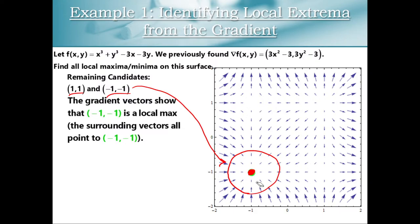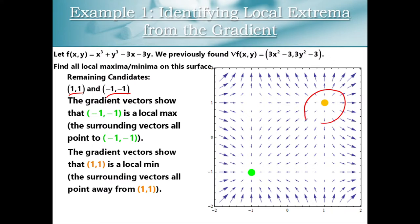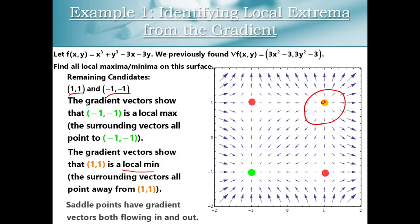So we have a local maximum at (-1,-1). Similarly, looking in the upper right, those gradient vectors are pointing away — if you want to go in the direction of greatest initial increase, get away from this point. That's going to be a local minimum. Saddle points have gradient vectors both flowing in and out, because we can go uphill in certain directions and downhill in others.